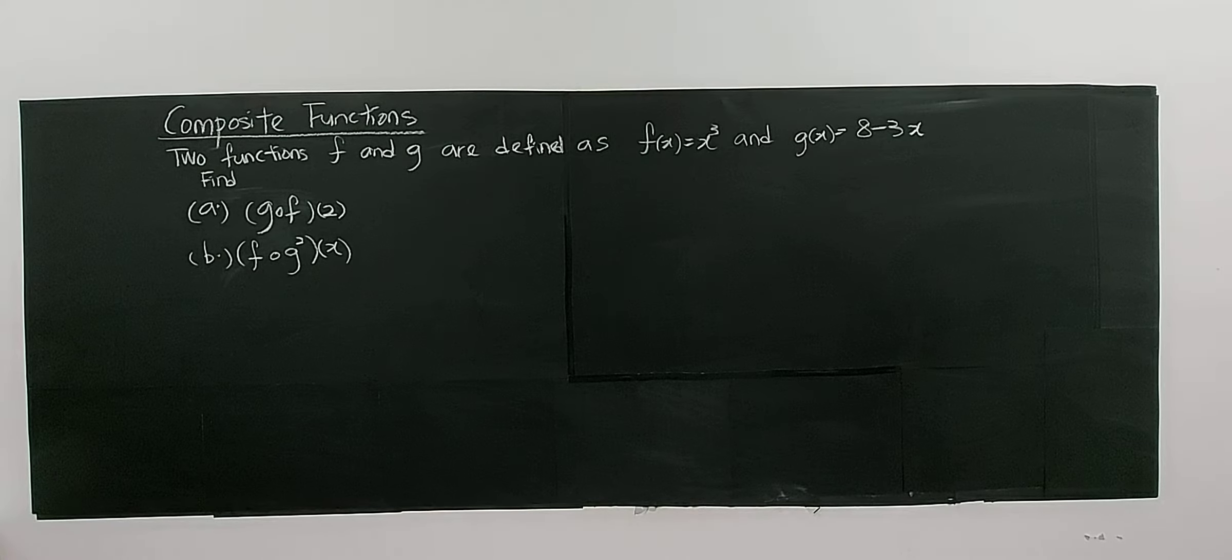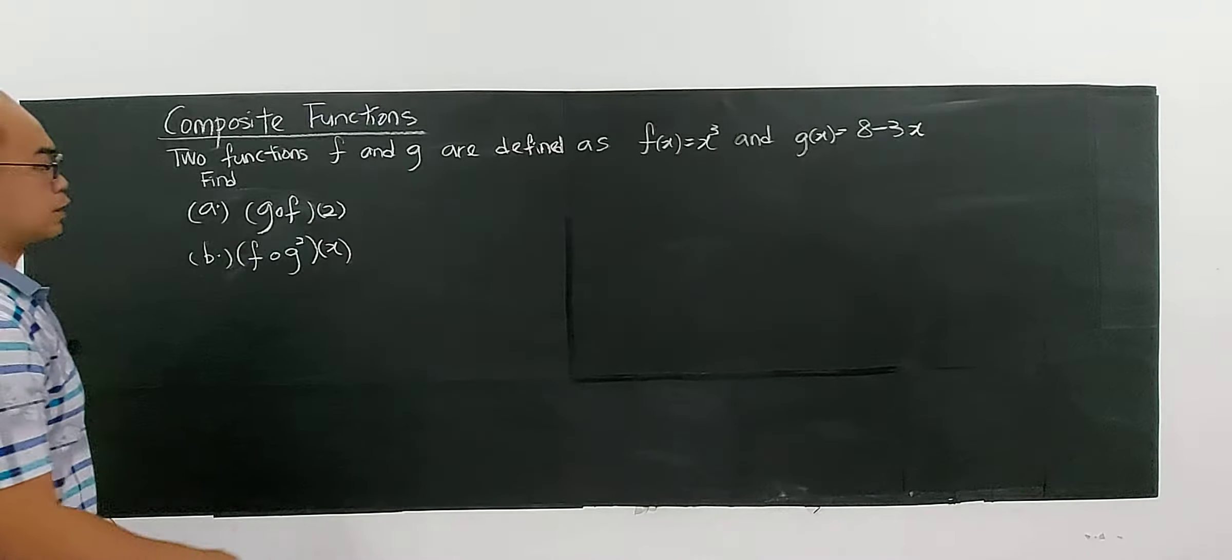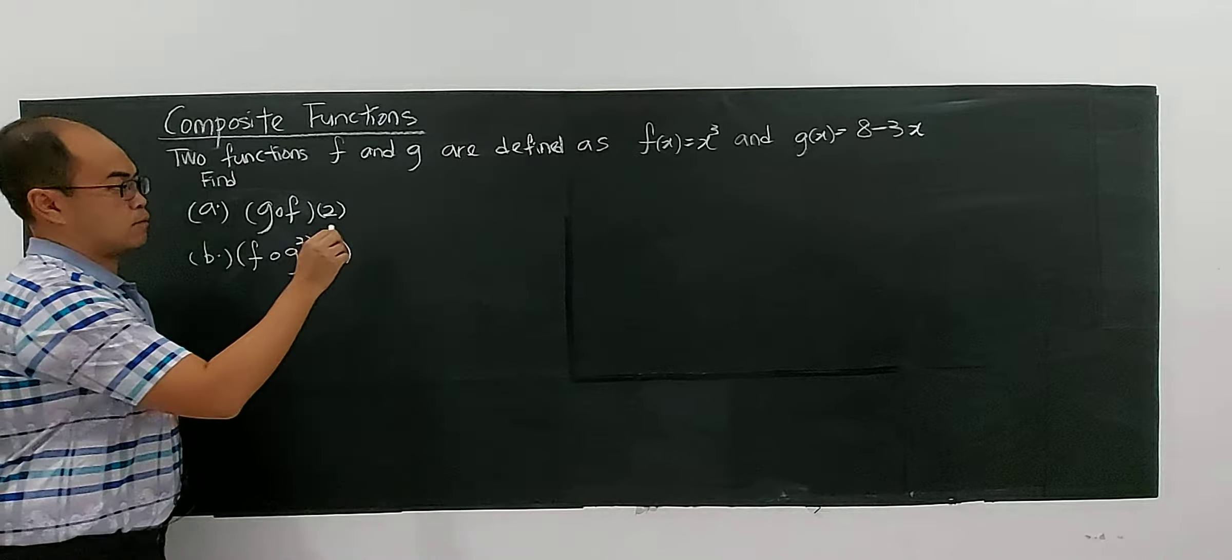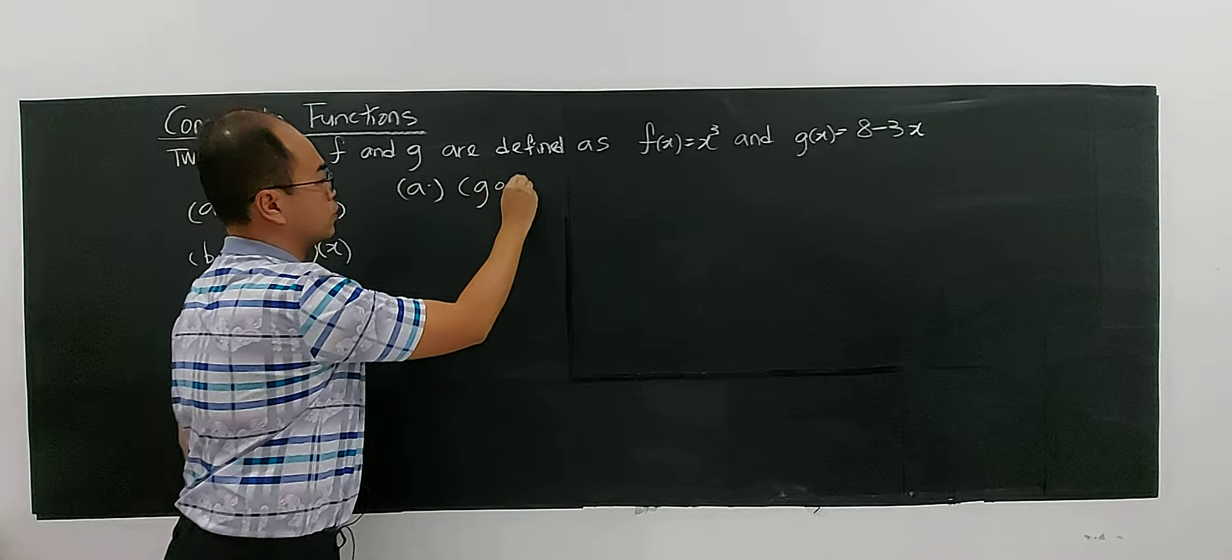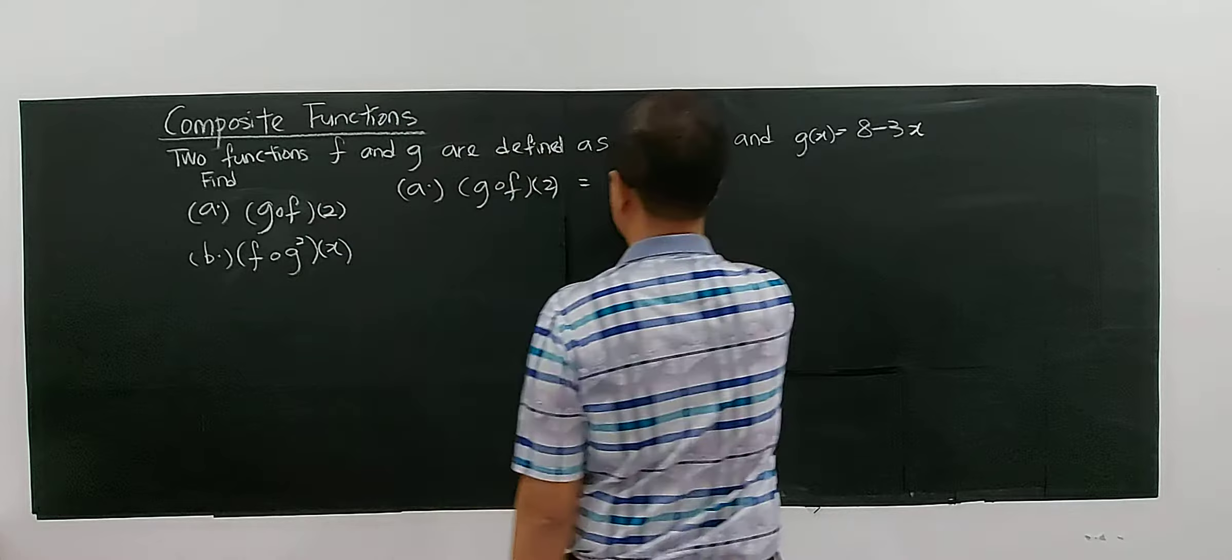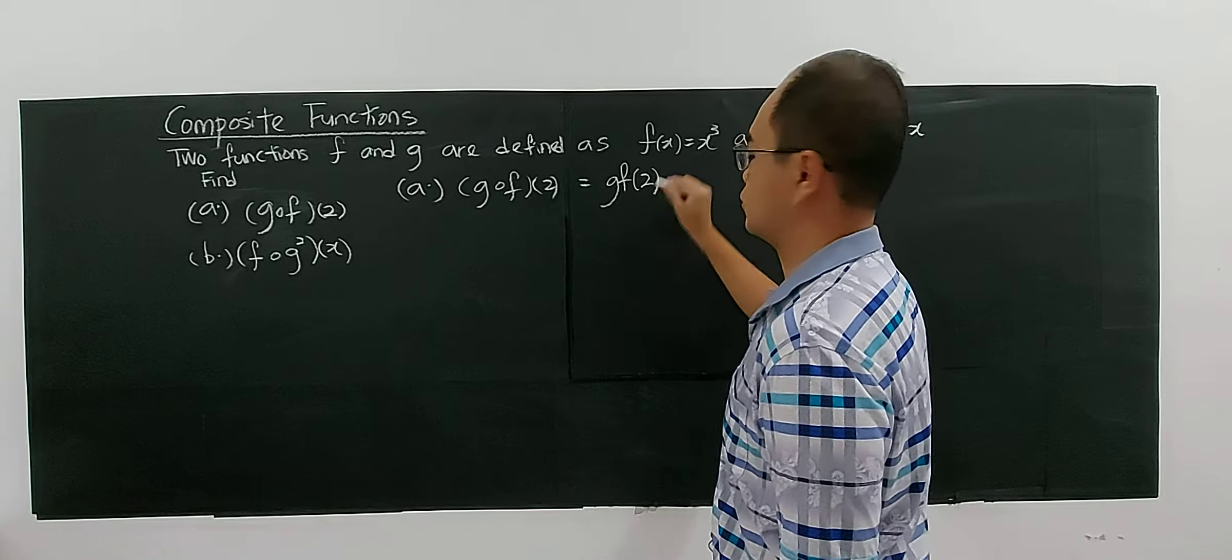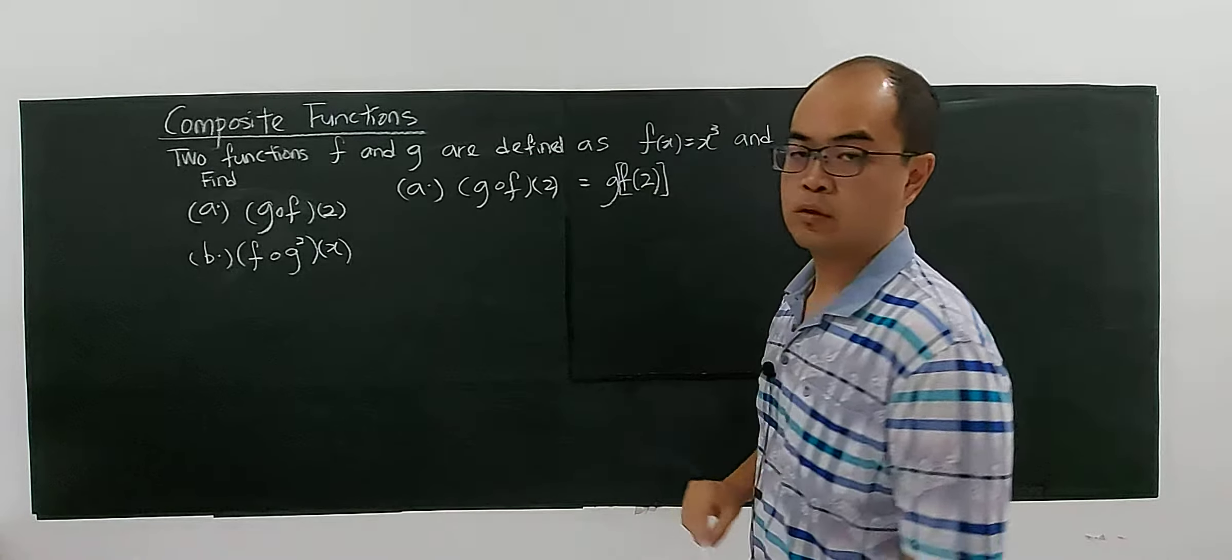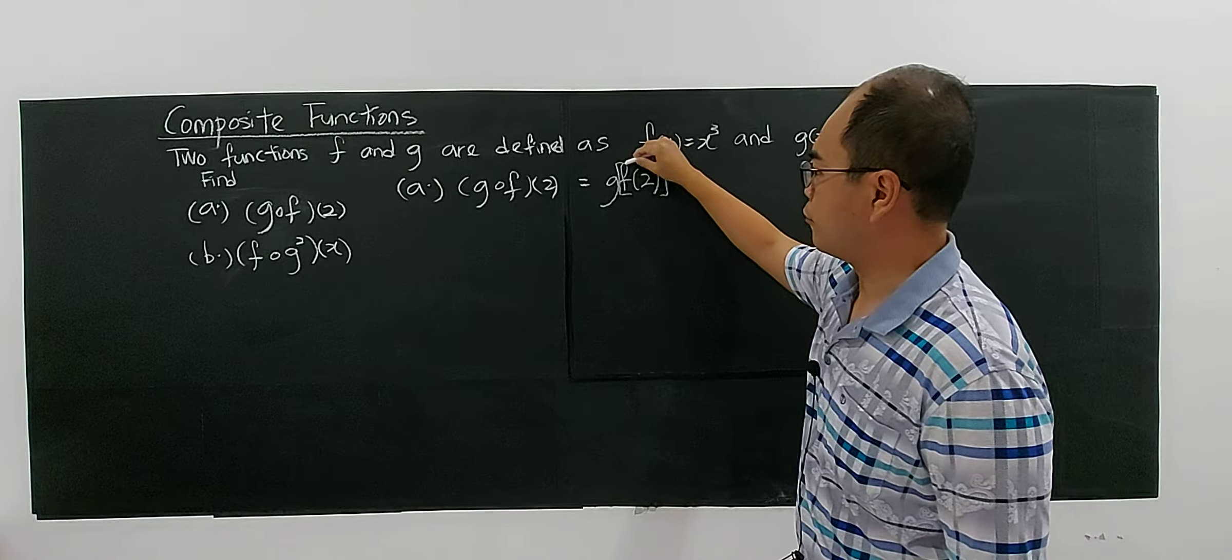Find g∘f(2), which means g composite f of 2. For part a, very simple. You have g∘f(2), which is the same as the composite function where f(2) will be the input for g, and 2 is the input for f. This whole thing is the input for g.